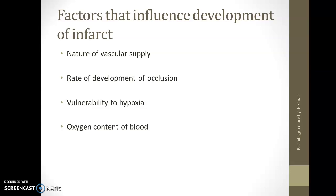So this brings us to the end of the video. To summarize: an infarct is an area of ischemic necrosis due to inadequate arterial supply or venous drainage to a tissue. Infarcts can be classified based on color as red and white infarct, based on the presence or absence of microbial infection as bland infarct or septic infarct, and sometimes even classified by age as recent infarct and old infarcts. These are the factors that influence the development of infarct.